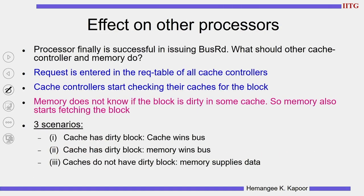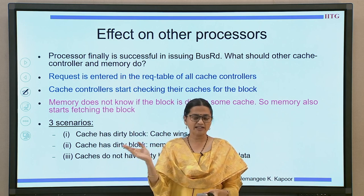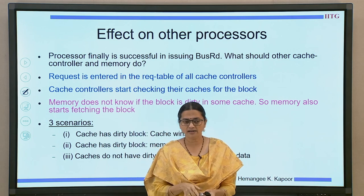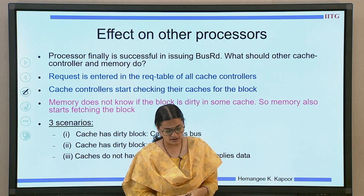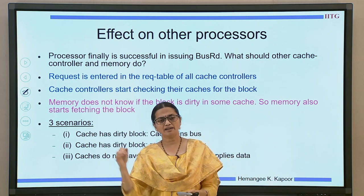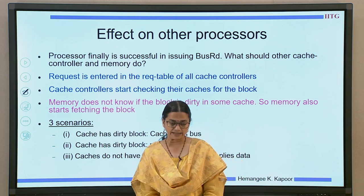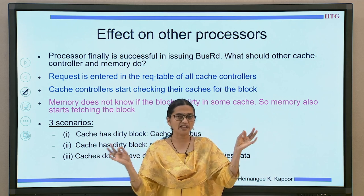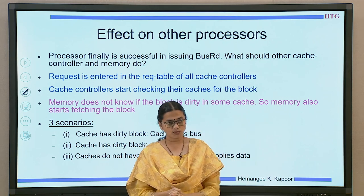Once the transaction is successfully placed on the bus, we consider its effect on other processors. Somebody has to provide data to P1 — either memory by default, or another cache which has the data in a modified state. When the transaction goes onto the bus, each processor's cache controller will snoop and check the state of the block in their local cache. Memory can start fetching data to send as a response, while another cache may decide it has the block in dirty state and should provide the data.